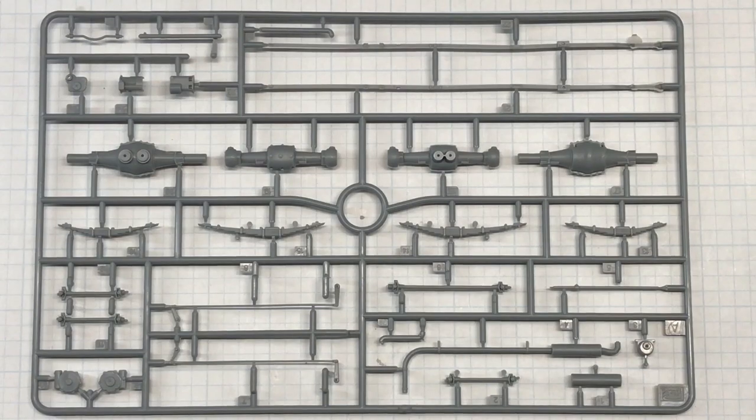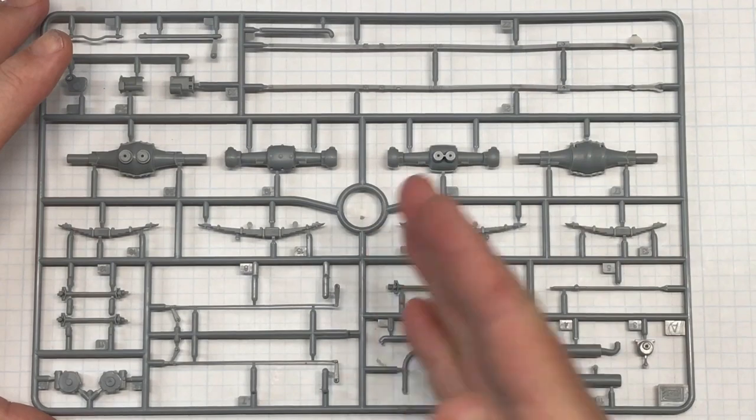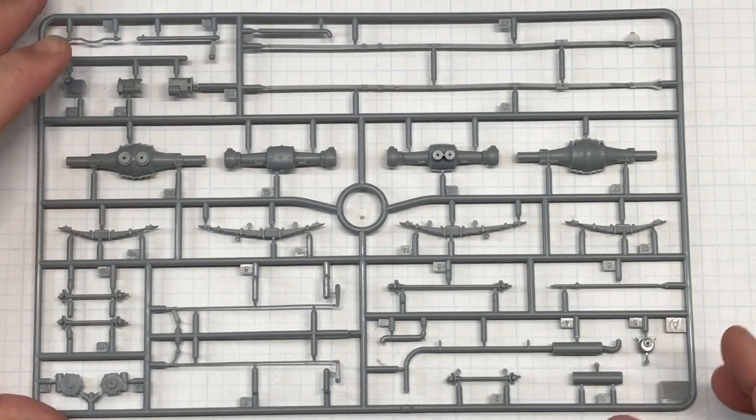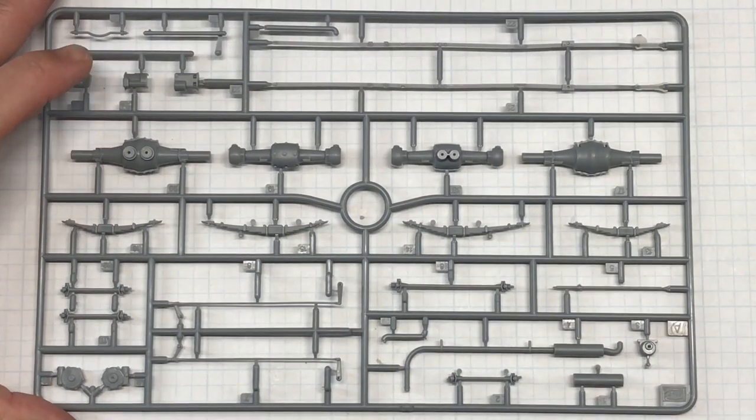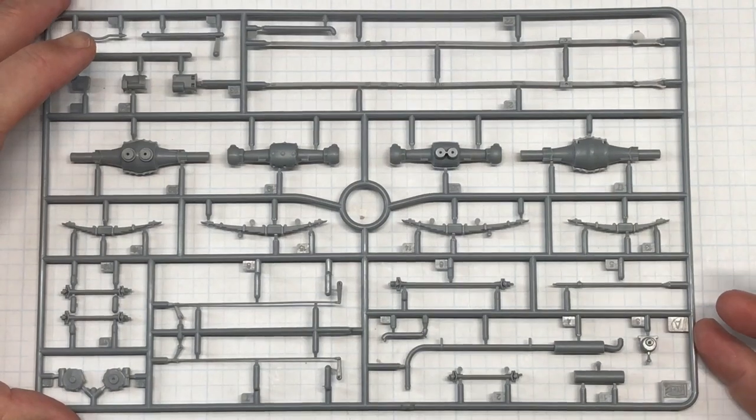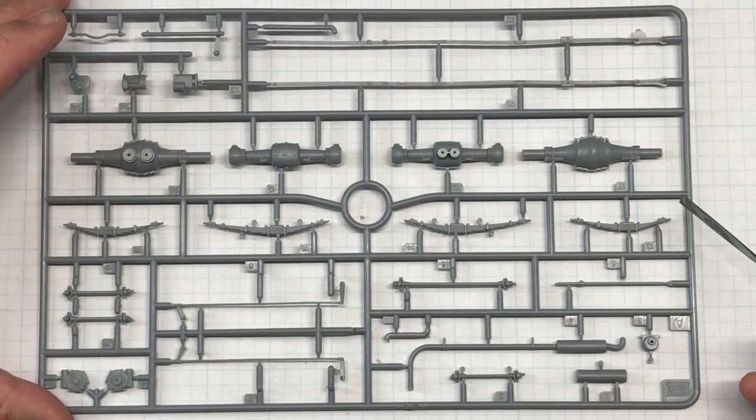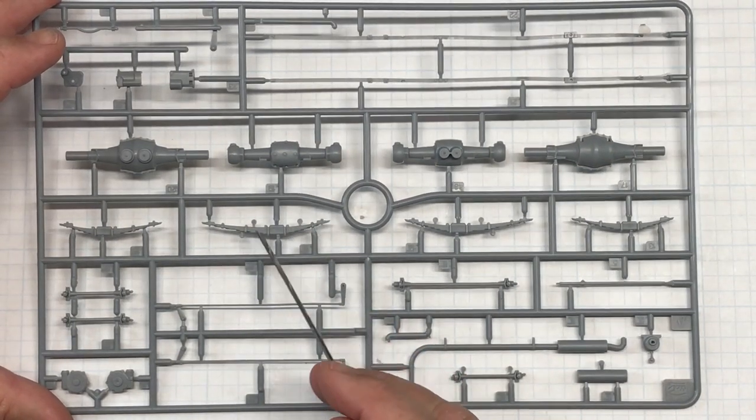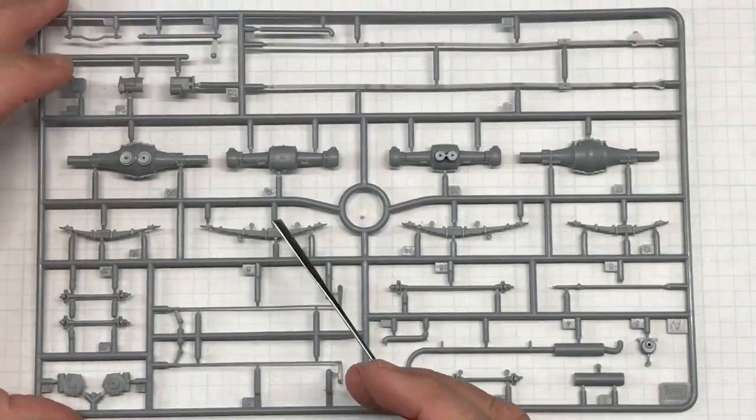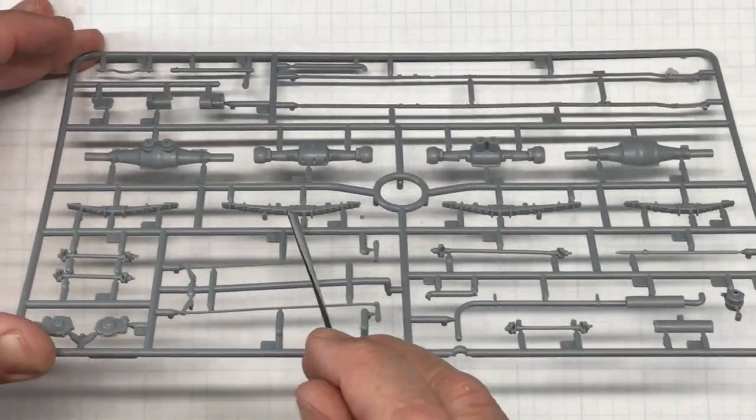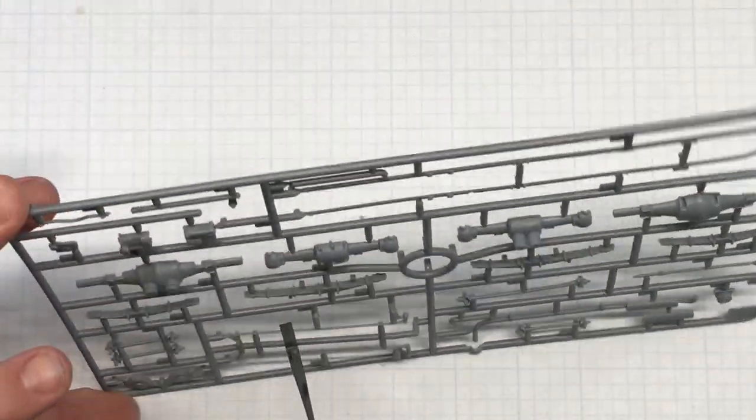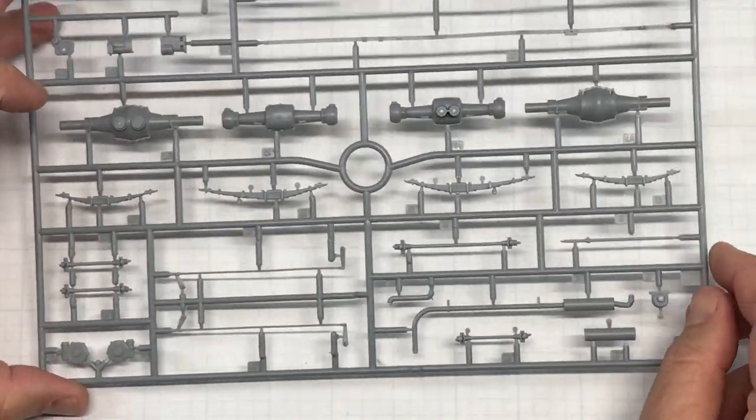Alright so here is sprue A. Some of these are double bagged, like A and B are in one bag, C and D are another, E and F, so on. At least they are in order so it is easy to sort them out. This is sprue A and it all looks pretty good. Nice detail on the differentials here. The leaf spring detail is good, throwing a wash on there will look good. A little bit of mold seam line on the top edge and the bottom edge of the leaf springs but real shallow, so it will be easy to clean up.